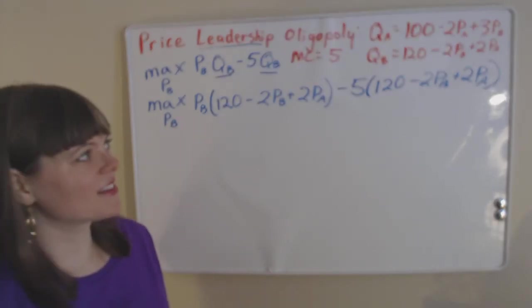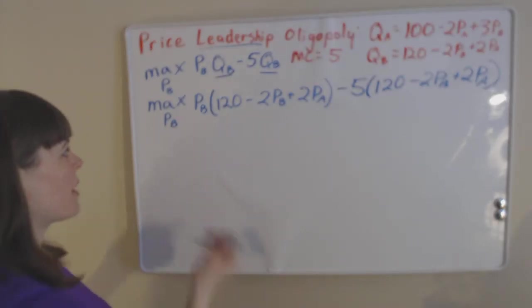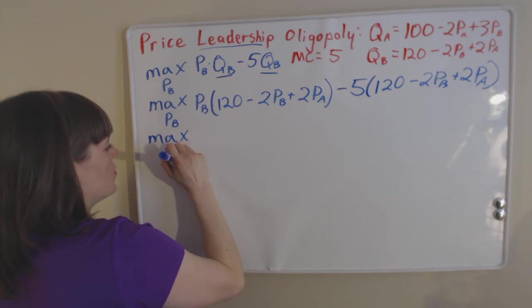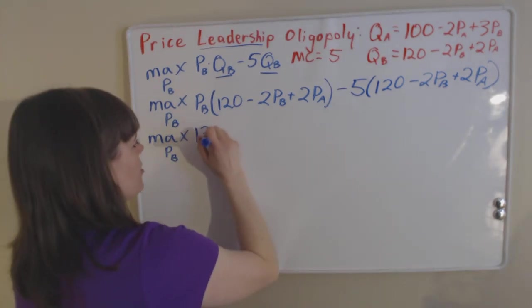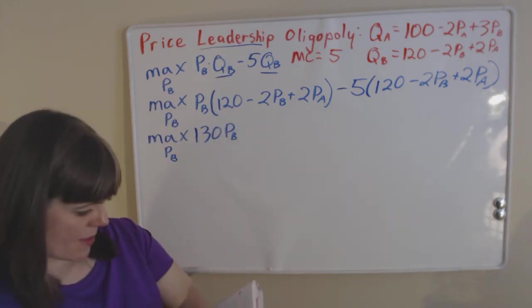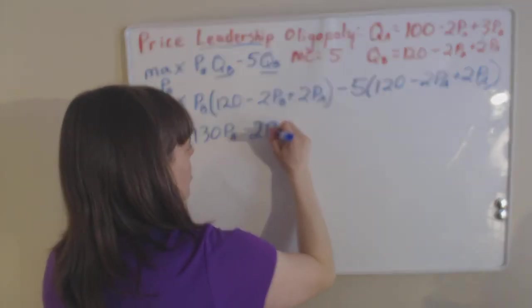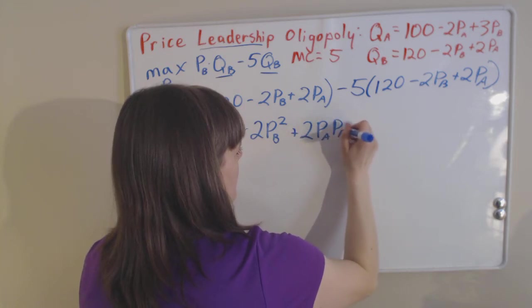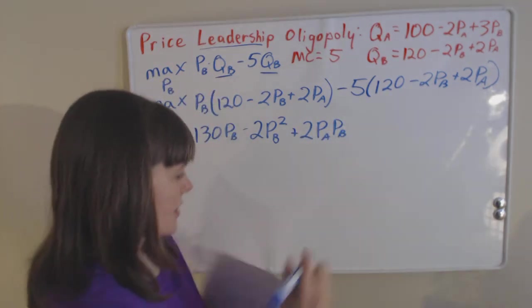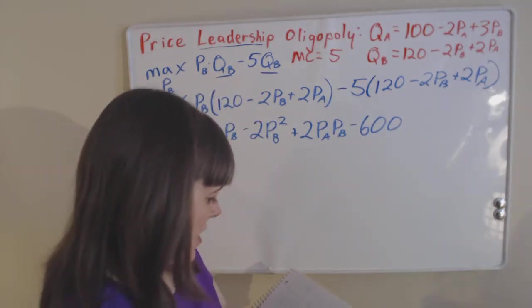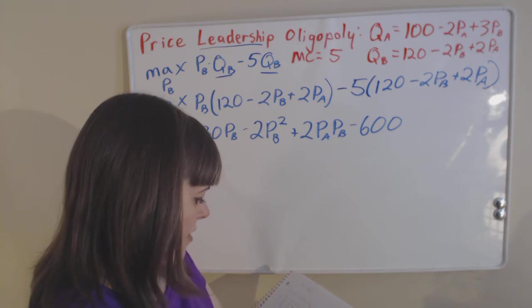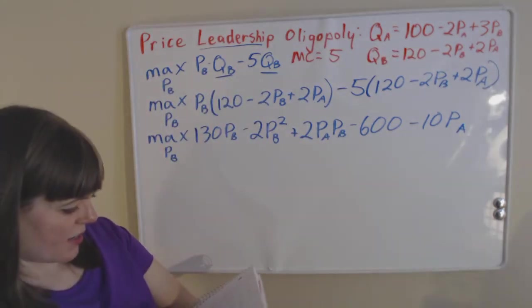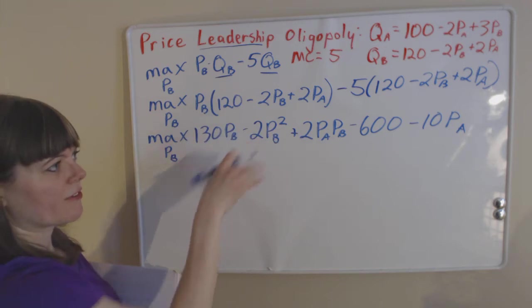This is a long, messy problem and involves a lot of algebra, but this whole thing simplifies to: 130PB minus 2PB squared plus 2PA·PB minus 600 minus 10PA. Now we're ready to take our first order condition. The maximization problem for firm B is set up, and we notice firm A's price is in there as an exogenous variable — at the end of this we're going to find the price of firm B in terms of firm A.